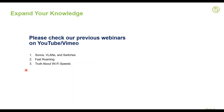We got a lot of feedback from dealers about pain points, and I saw topics covered in previous webinars. Please check those webinars — particularly three: the Sonos, VLANs, and Switches webinar from last year covering VLAN setup and Sonos; the fast roaming webinar when we announced the 500–700 access points; and last month's webinar on the truth about Wi-Fi speeds to level-set expectations with customers. Today I will not dive into the details of each — there's also a lot of content online in the product support tab.